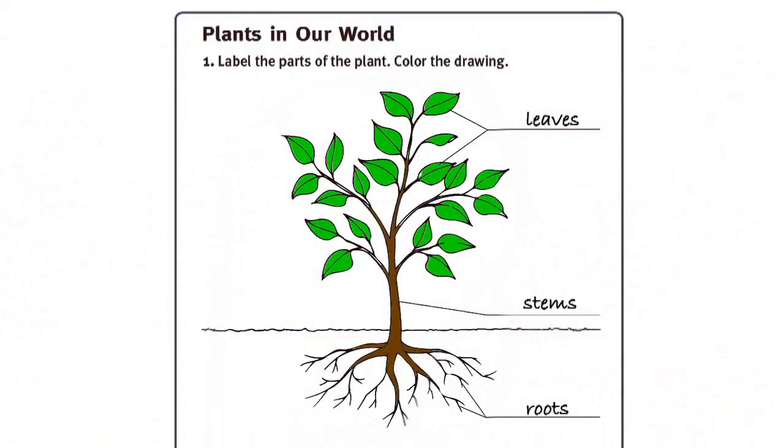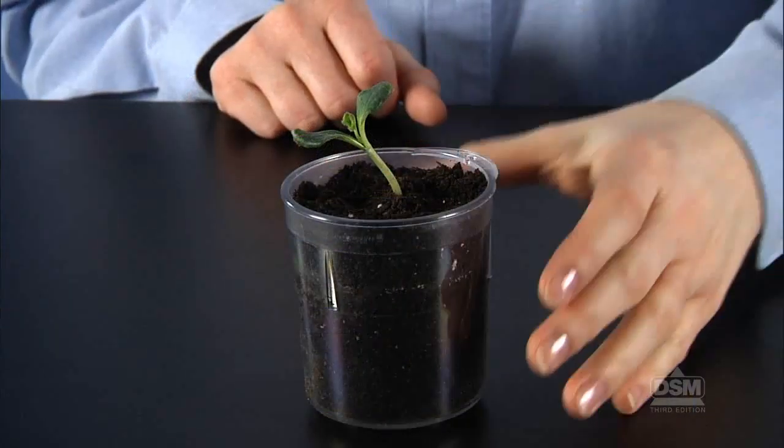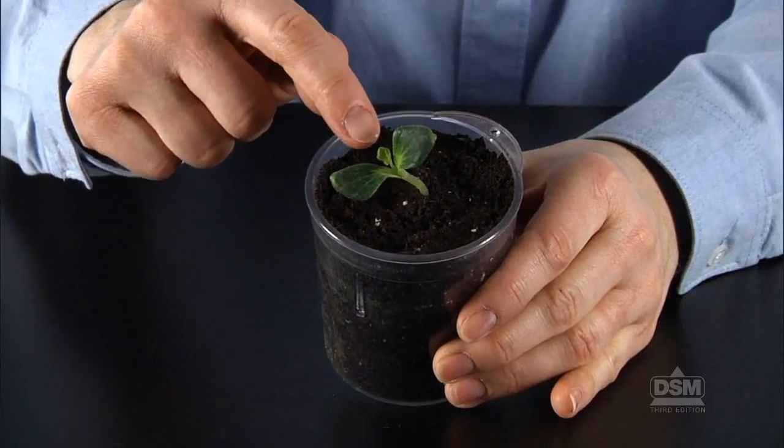To begin Session 1, redistribute each student's copy of Activity Sheet 1 and review the parts of a plant shown in the diagram. Divide the class into teams of four and tell the teams to retrieve the plants grown from seeds in Activity 3. By this time, the plants should have a well-developed stem and several sets of leaves.